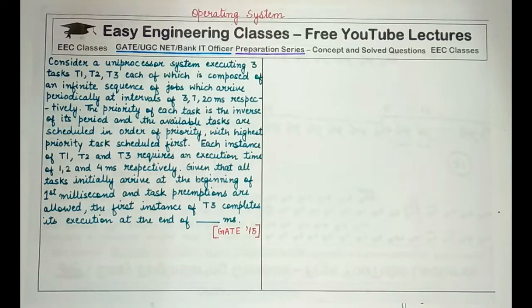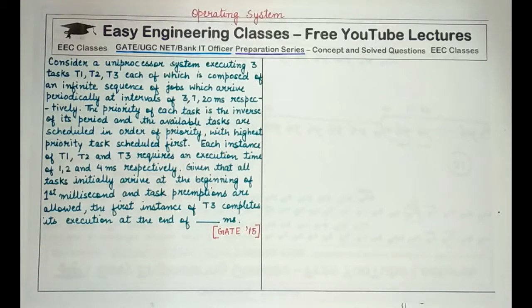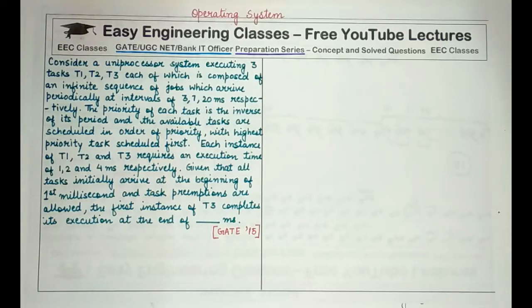The question is: consider a uniprocessor system executing three tasks T1, T2, T3, each of which is composed of an infinite sequence of jobs which arrive periodically at intervals of 3, 7, and 20 milliseconds respectively. The priority of each task is the inverse of its period, and the available tasks are scheduled in order of priority with the highest priority task scheduled first. Each instance of T1, T2, T3 requires an execution time of 1, 2, and 4 milliseconds respectively.